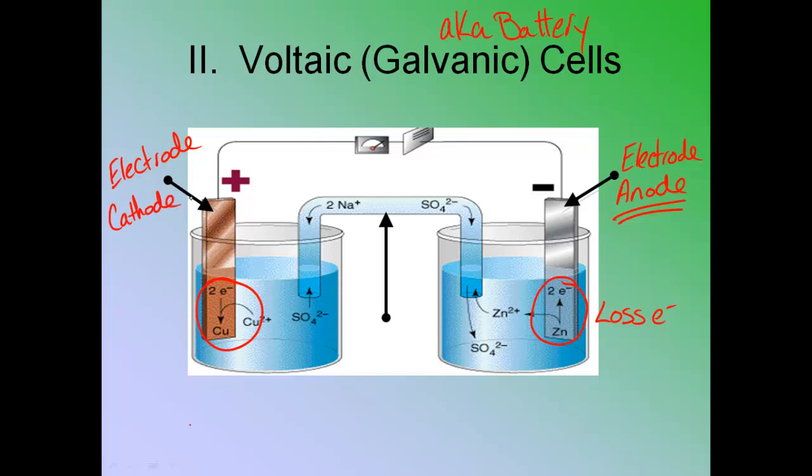Yes, like a cathode ray tube. And you're like, what is that? It's what TVs used to be made out of. Before your time people, before your time. So cathode and anode. So your cathode is where you're gaining electrons. And your anode is where you're losing electrons.